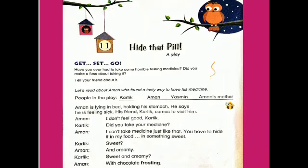This play is about a boy who is ill and has to take medicine but he dislikes taking medicine. That boy's name is Aman. So let's read about Aman, who found a tasty way to have his medicine. Characters in this play are Aman, Karthik, Yasmin and Yasmin's mother.